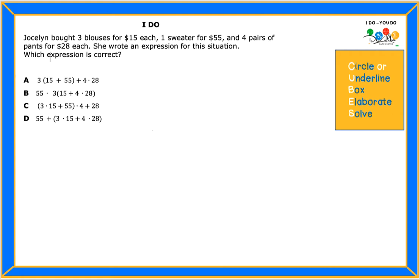Joseline bought three blouses for fifteen dollars each, one sweater for fifty-five dollars, and four pairs of pants for twenty-eight dollars each. She wrote an expression for this situation. Which expression is correct?